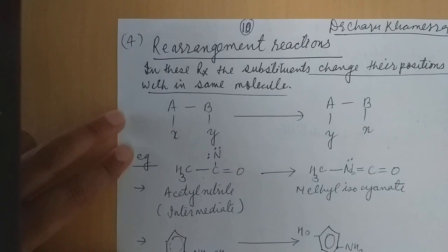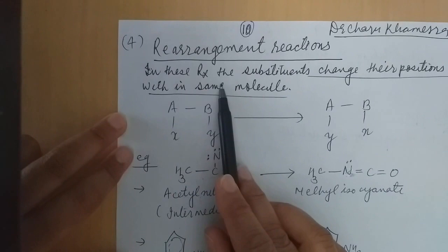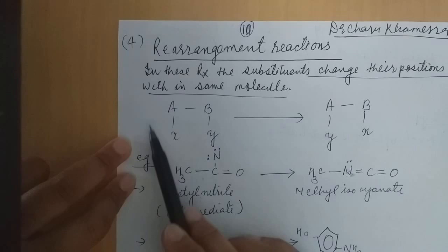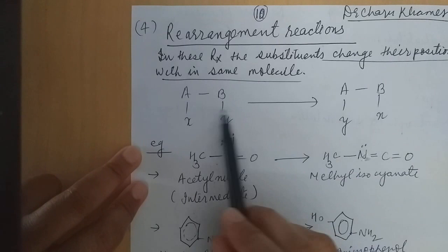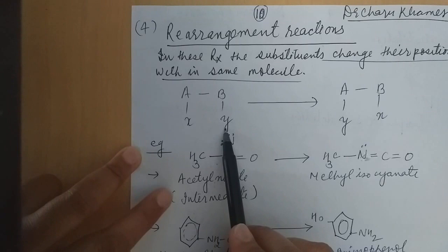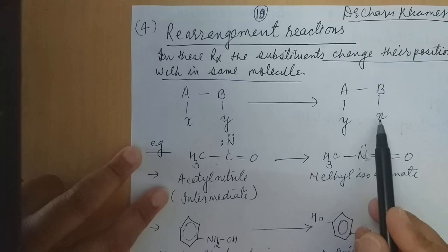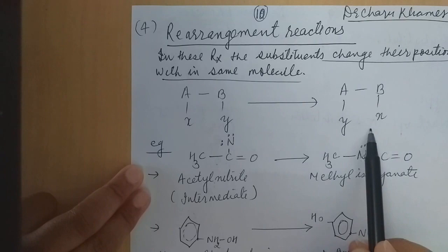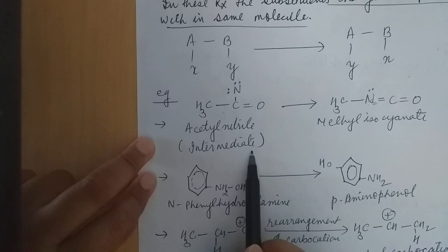Now the last is the rearrangement reaction. According to its name — rearrangement — we rearrange the substituents. In these reactions, the substituents change their positions within the same molecule. Example: in molecule A, on X substituted, B on Y substituted — after the reaction this is the rearrangement. Like acetyl nitrile as an intermediate — when it undergoes rearrangement, it forms methyl isocyanate.